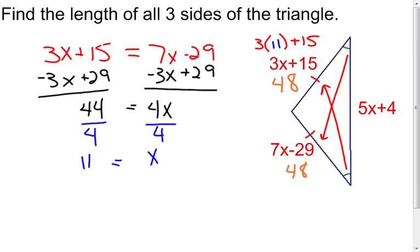Which means this one's also going to have to be 48. And you can plug the 11 in there, 7 times 11 is going to put you at 77. And 77 minus 29, right back to 48. The only other one that I have to do is the base of my isosceles triangle.